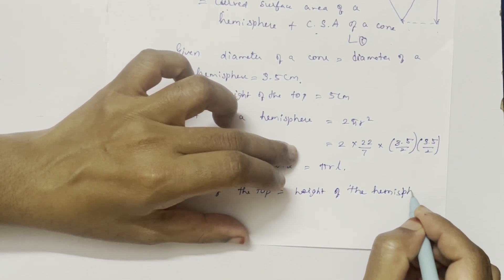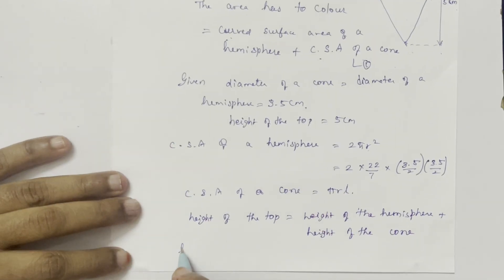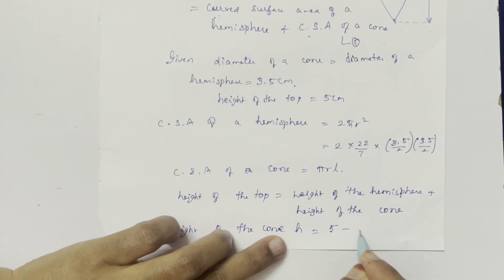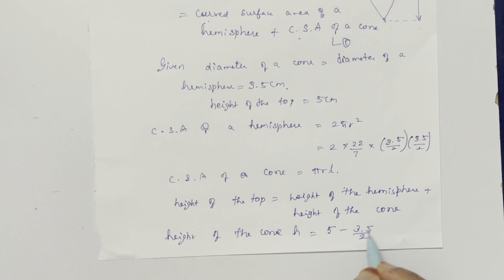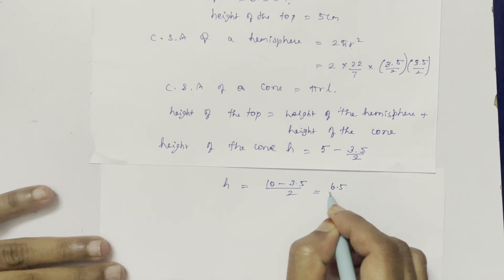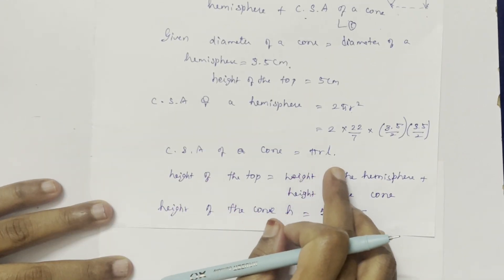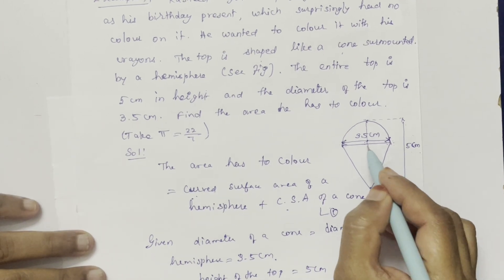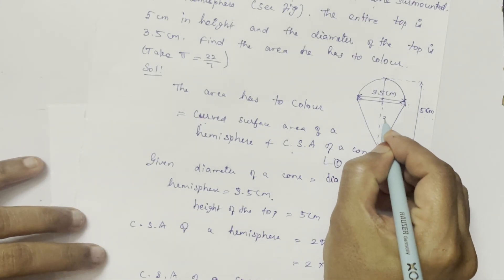The height of the hemisphere equals its radius. So the height of the cone equals 5 minus 3.5 by 2. Since the diameter is 3.5, radius is 1.75, giving height of cone equal to 3.25 cm. L is the slant length of the cone.